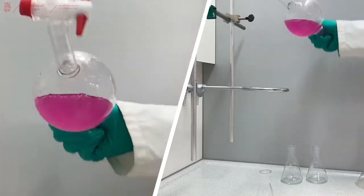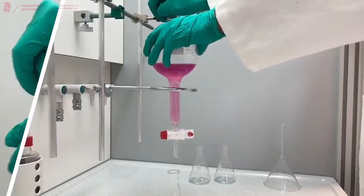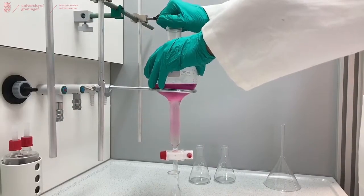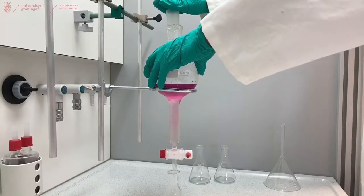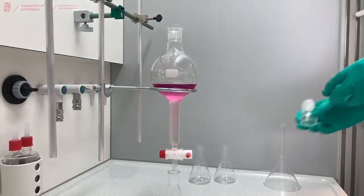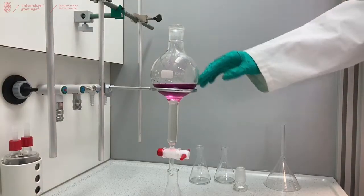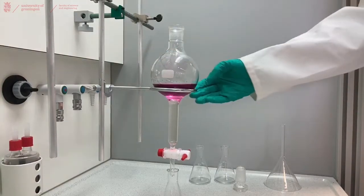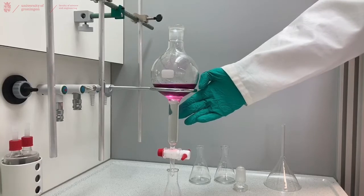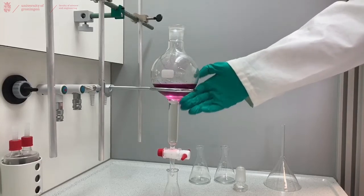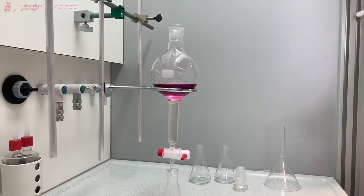When you think the extraction is done, place it back into the ring and remove the stopper. When the separator funnel stands for a while, you will see a clear difference between the two layers. The higher density water is at the bottom and is colorless in this case, and our pink pentane layer is at the top.